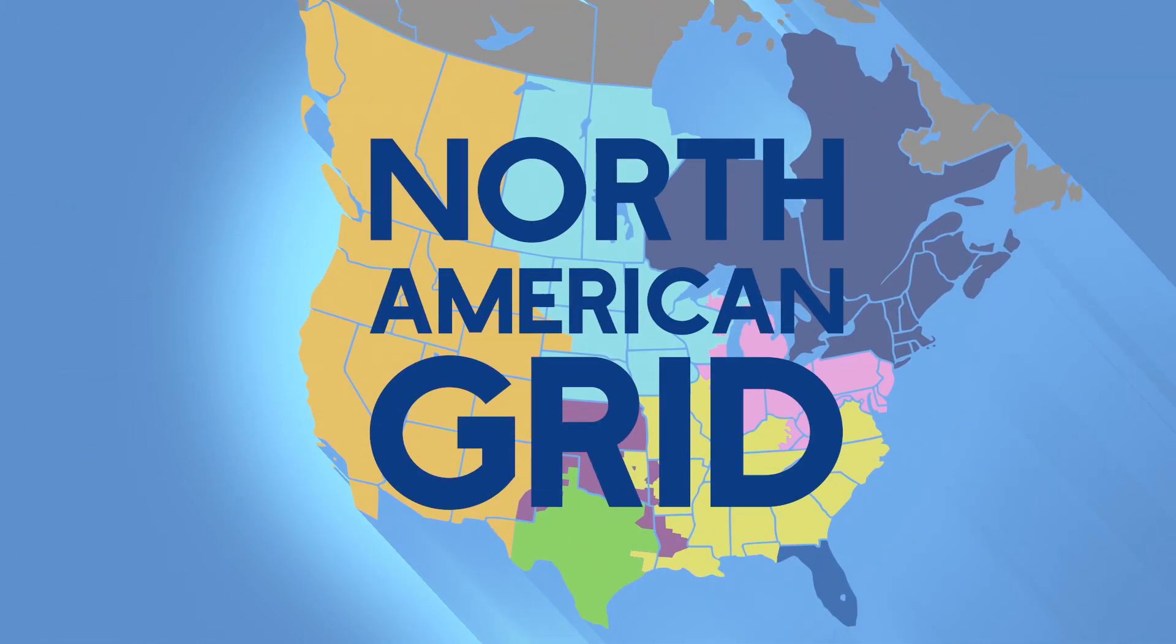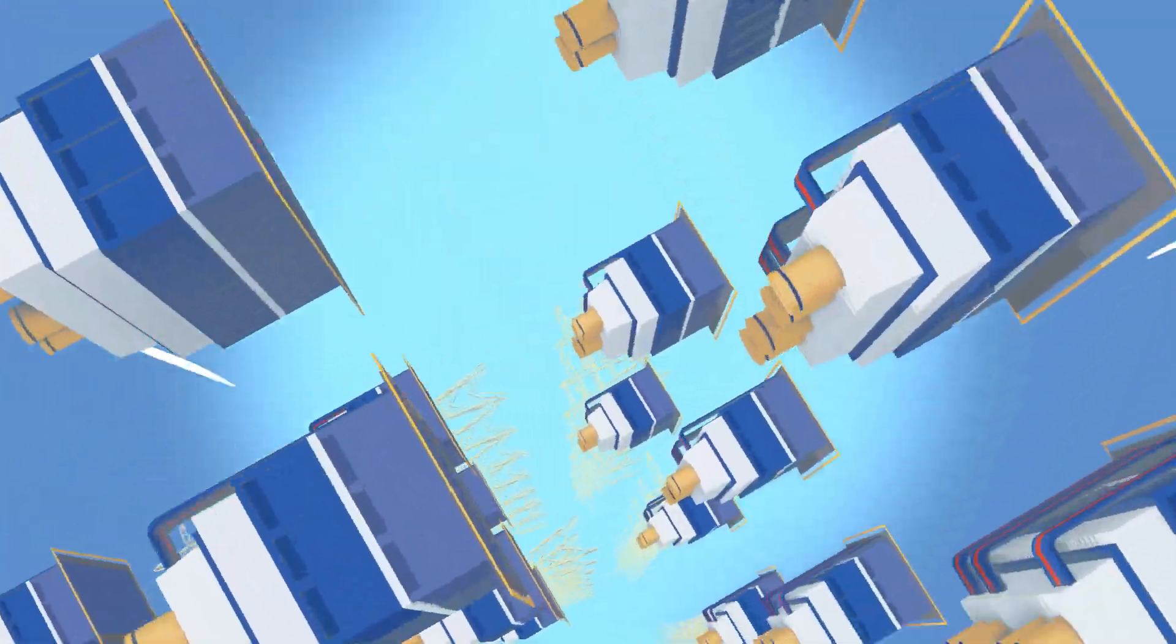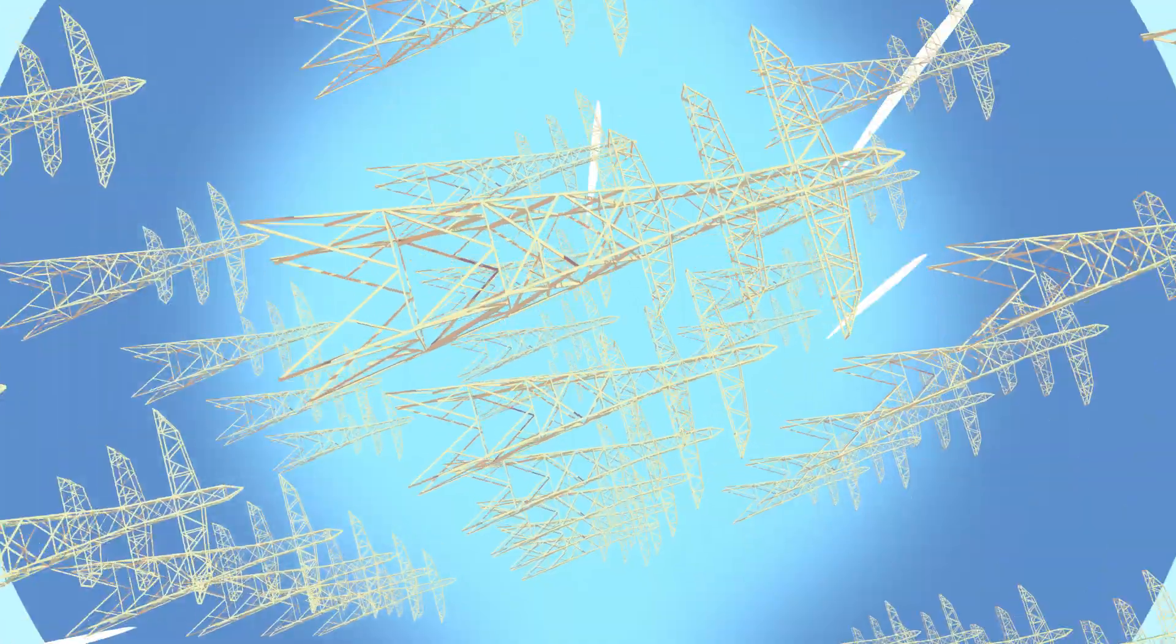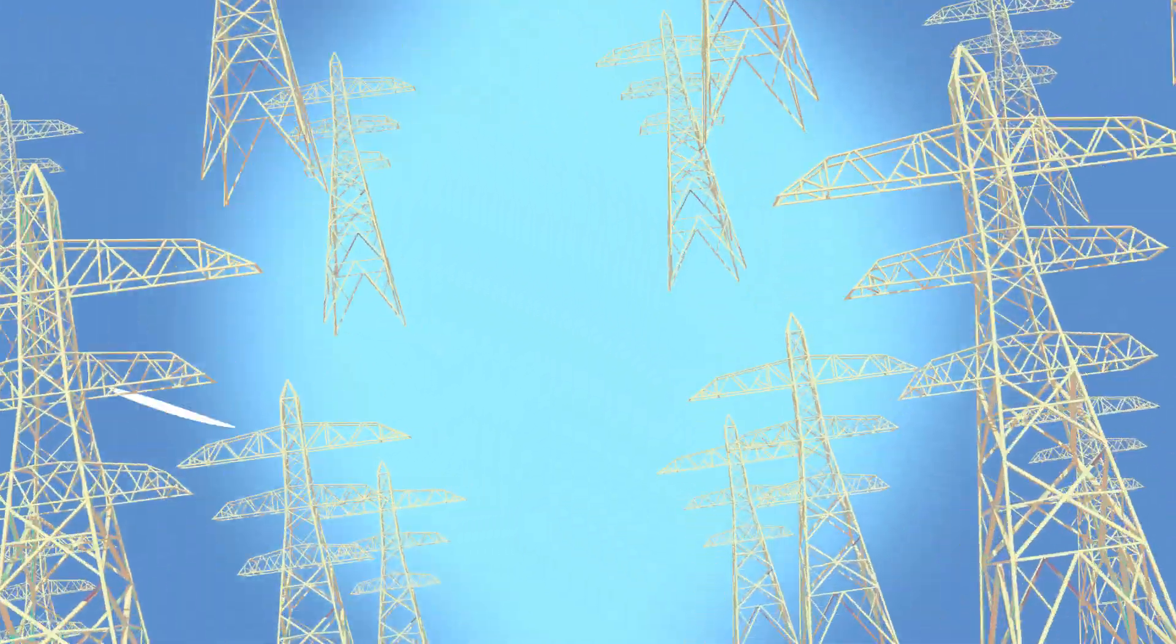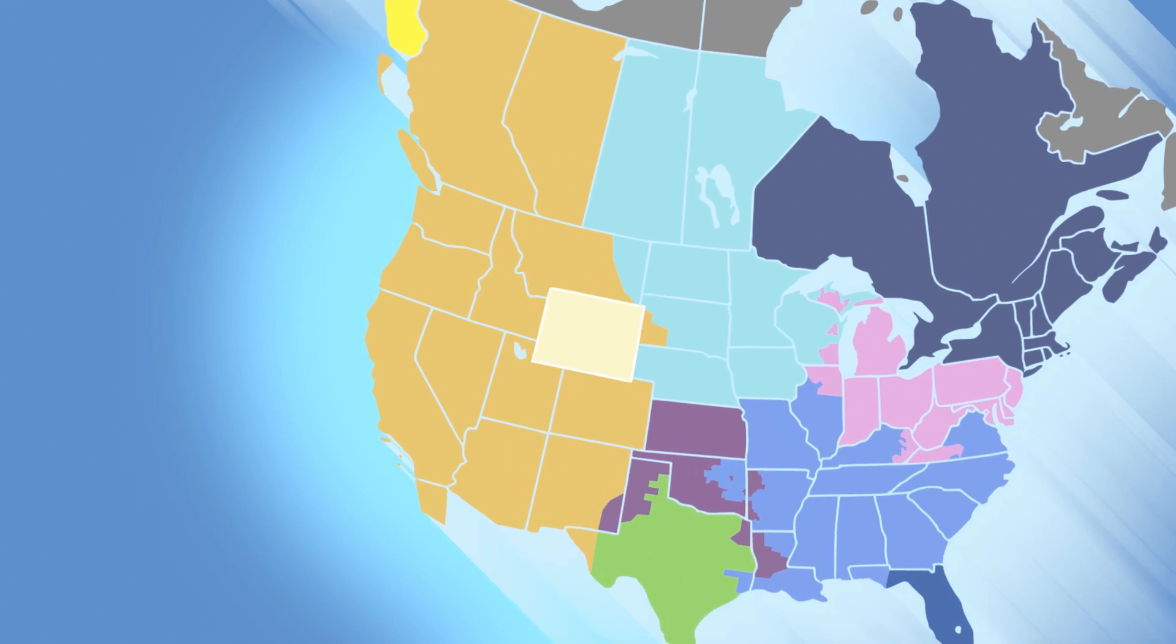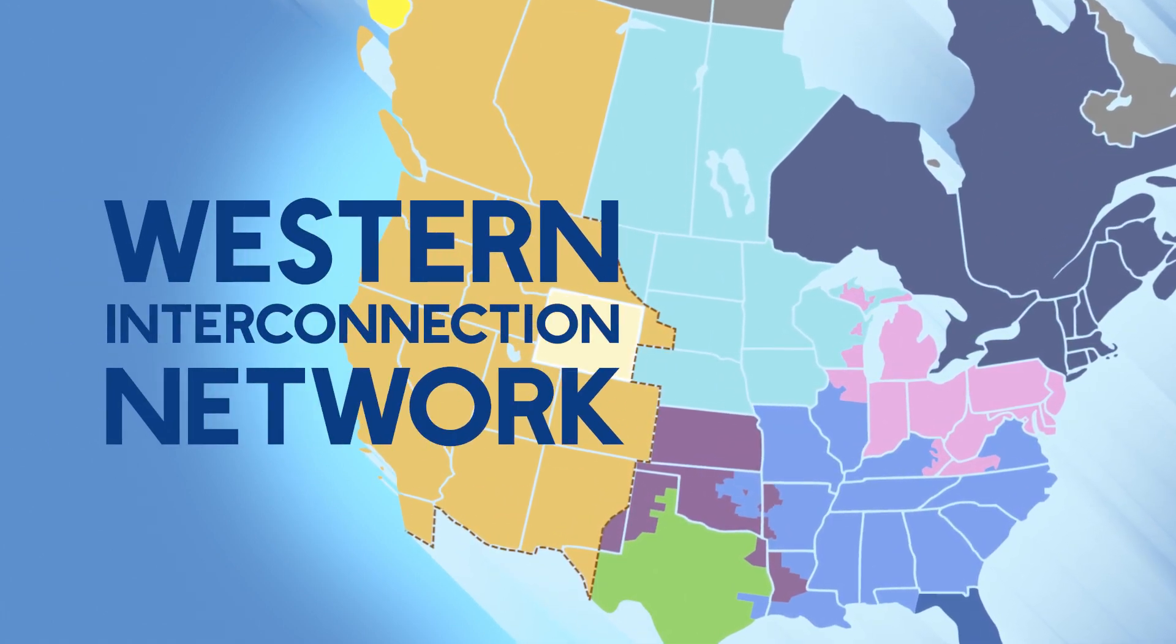The North American grid is made up of 11,000 power plants, 3,000 utilities, and more than 2 million miles of power lines. As soon as electricity is produced in Wyoming, it goes into the regional grid, the Western Interconnection Network.